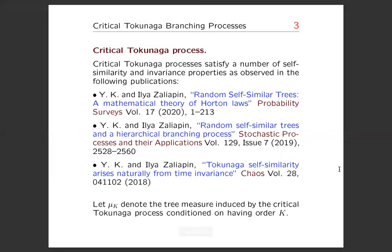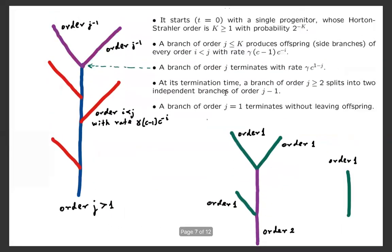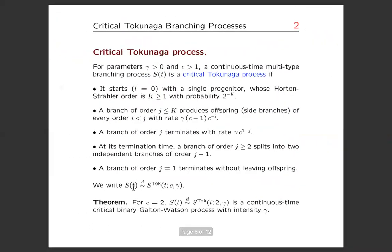Here's the literature where you can read about the process. In particular, the Probability Survey has most of the results needed here. There are lots of self-similarity invariance processes. In particular, if we consider the second parameter c equal to two, then the process is just the continuous-time critical binary Galton-Watson process with intensity gamma.